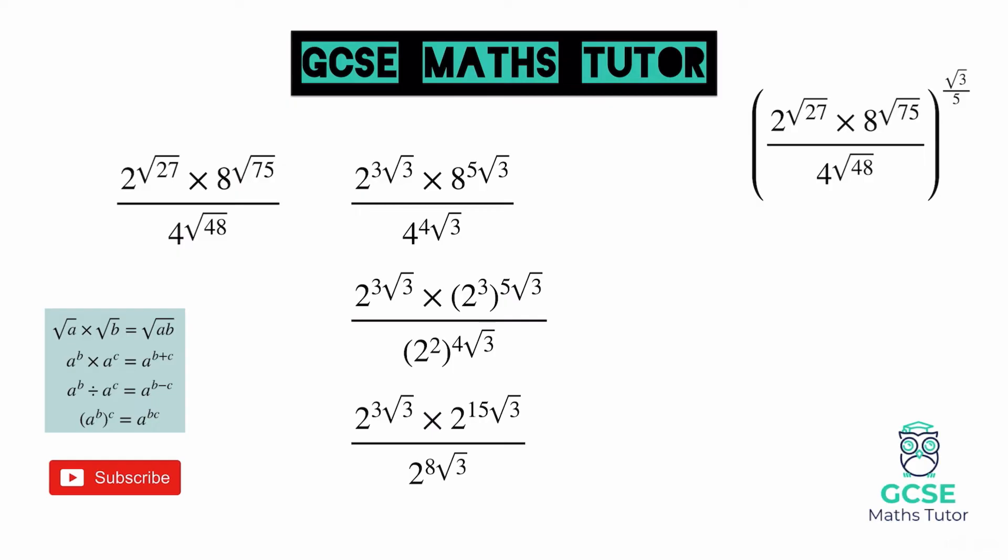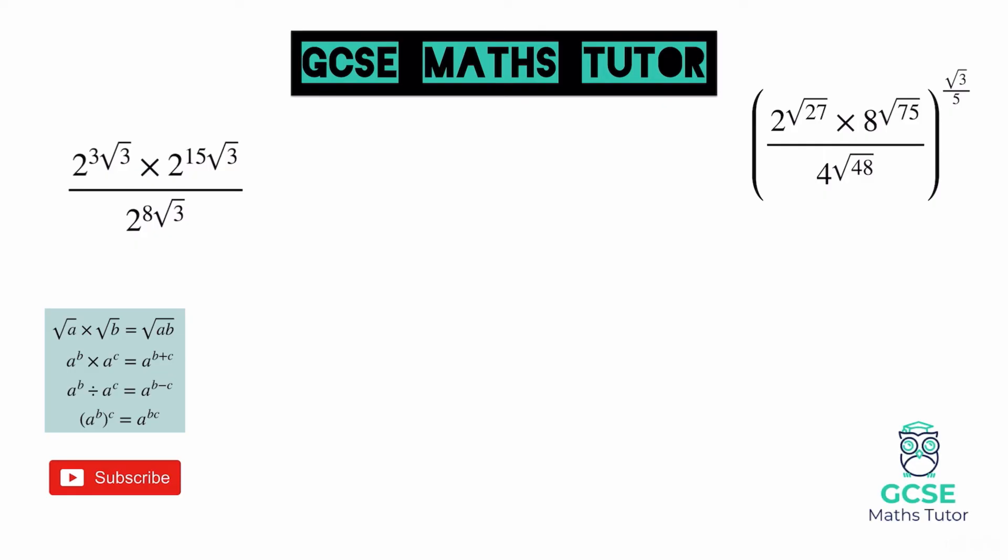So the first thing we can actually do is multiply the top together, and that will allow us to add the powers. And if we add those powers, let's see what we get. So for the first one, we are going to get 2 to the power of 18 root 3, and on the bottom there, we've still got 2 to the power of 8 root 3.